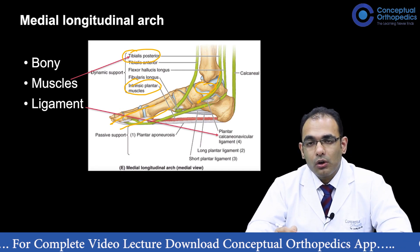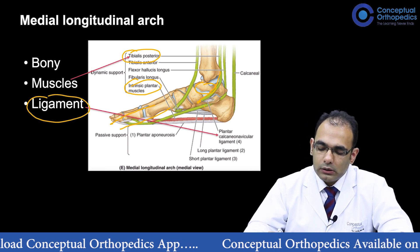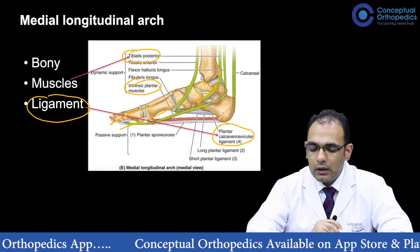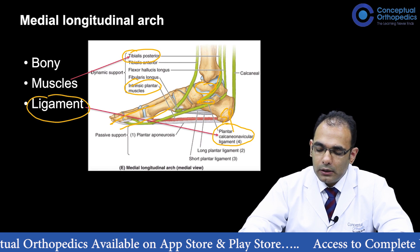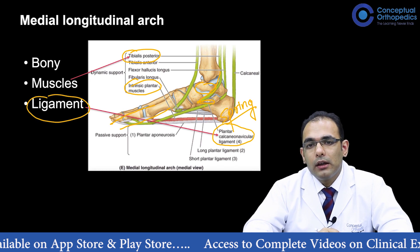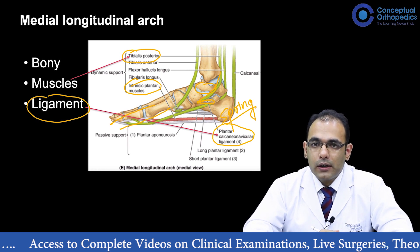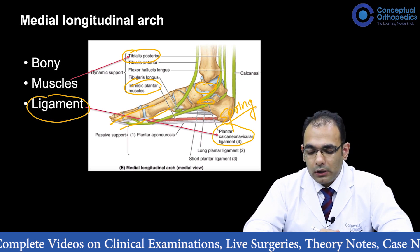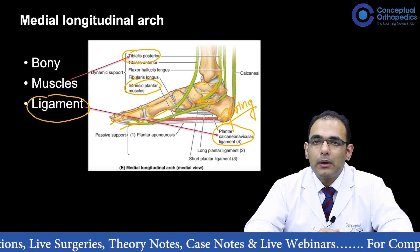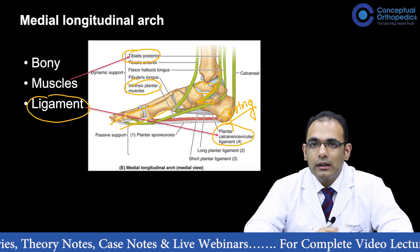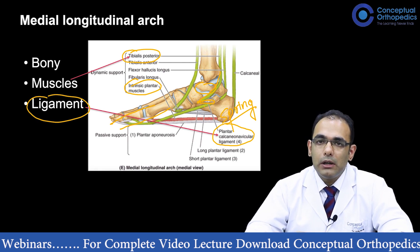The passive stabilizers of the longitudinal arch are the ligaments. The most important is the plantar calcaneonavicular ligament, also called the spring ligament. The spring ligament is a key static stabilizer of the longitudinal arch and has a significant role in the development of flat foot deformity. It is even said that the spring ligament may be the first structure to attenuate, even before the tibialis posterior, so it needs to be assessed clinically as well as radiologically. Apart from that, the plantar aponeurosis and plantar ligaments also help in maintaining the medial longitudinal arch.